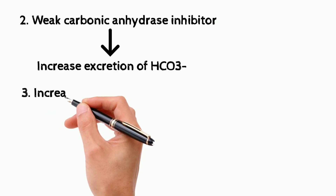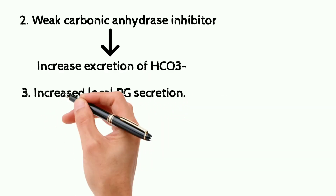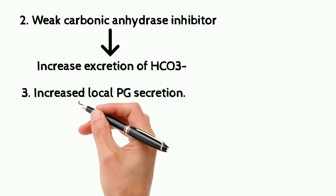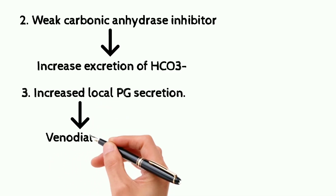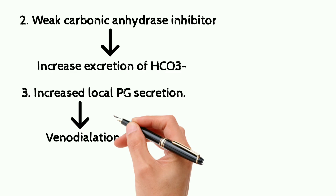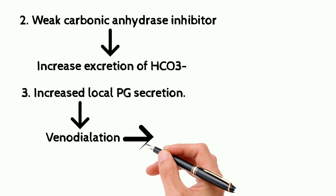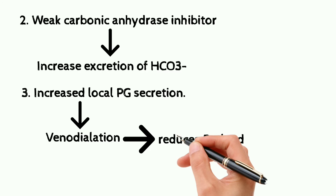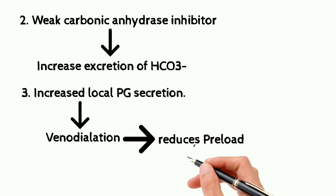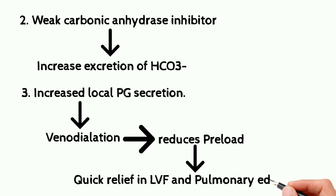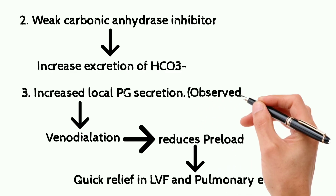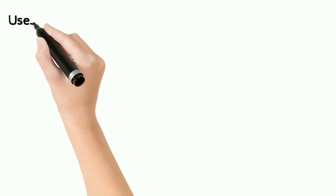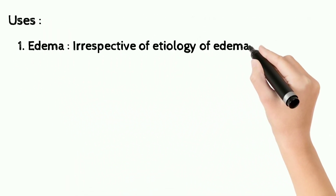Another very important mechanism of action of furosemide is increased local prostaglandin secretion. These prostaglandins cause mainly venodilation, increasing venous capacitance, which reduces preload and the workload on the heart. This provides quick relief in left ventricular failure and also in pulmonary edema.